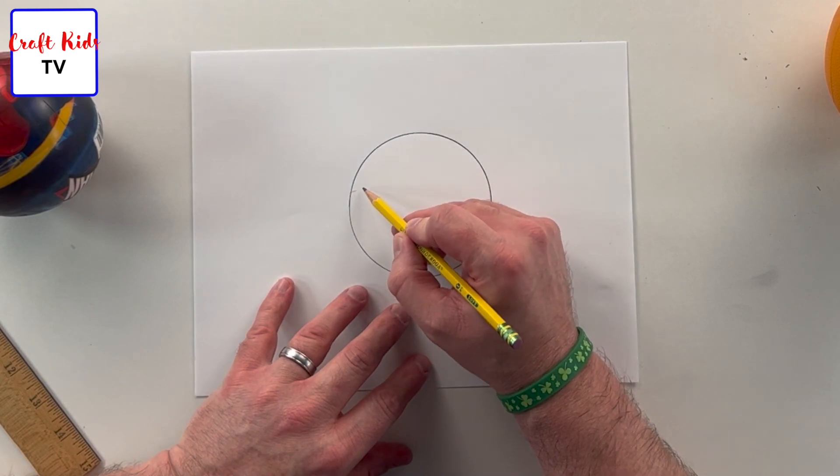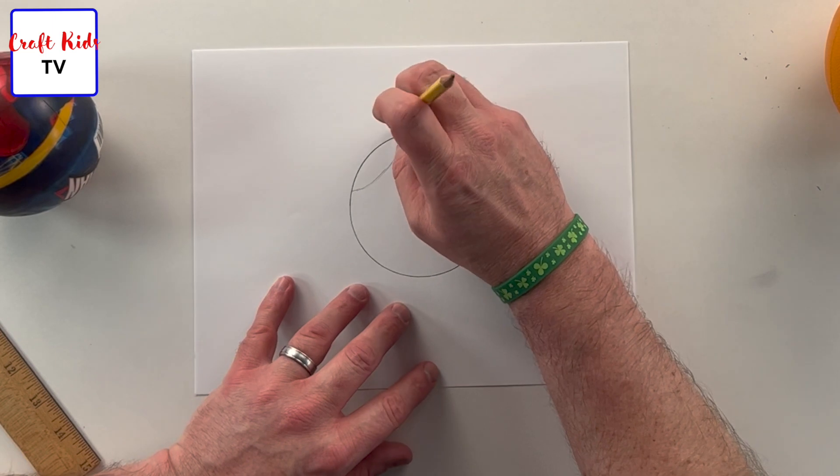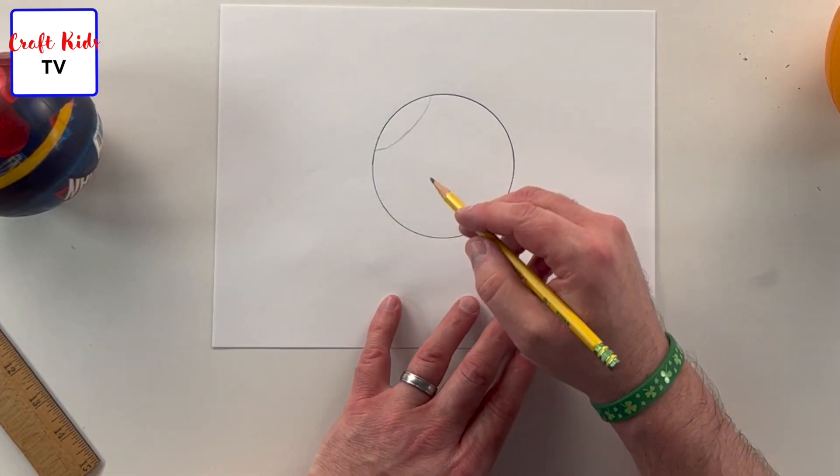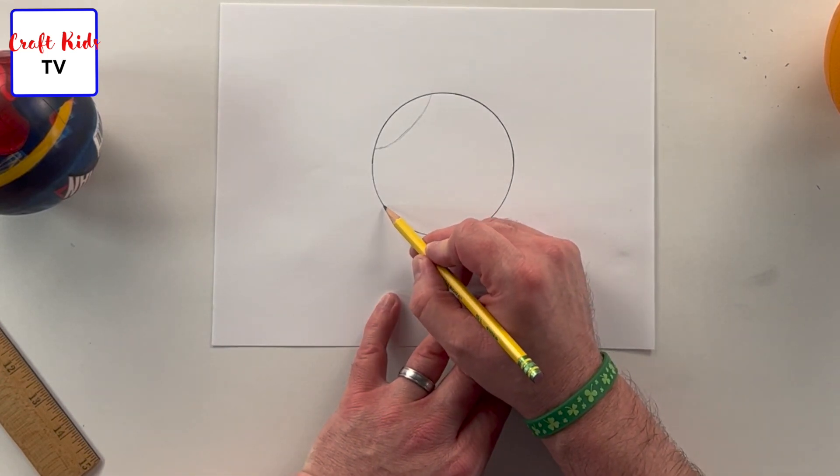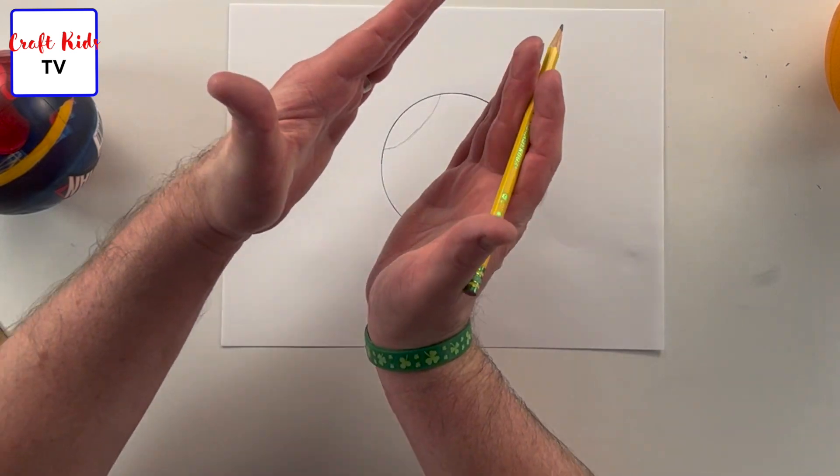And then about halfway down the ball we're gonna have the difference between the bright side of the ball and the dark side of the ball, so the side with the light and the side with the shadow.